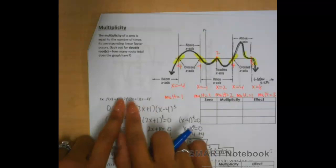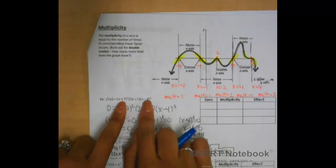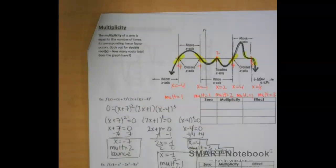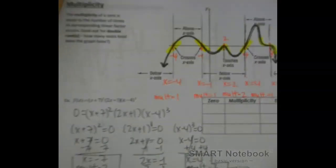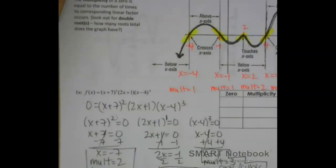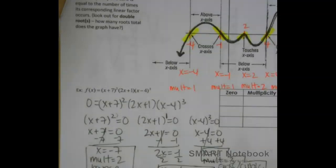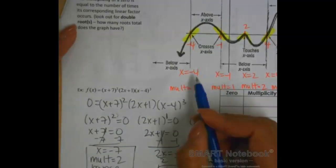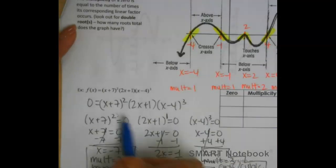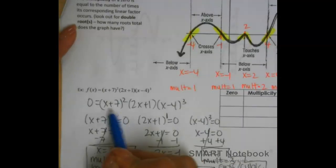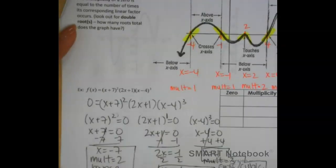Here's the first thing you should do. Each of the items in parentheses — what are they? These items are just your linear factors, which are the same thing as your x-intercepts. So all of these x-intercepts, I need to make into linear factors. I need to write them in their binomial form.